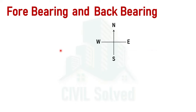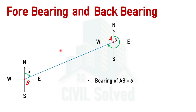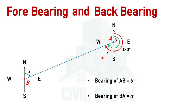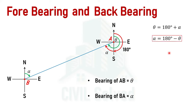Moving to the case where the line lies in the southwest quadrant: starting point is A, ending point is B, and the bearing of AB is theta. We want to calculate the bearing of BA, which we call alpha. Using the same geometric concept, if this angle is alpha then the corresponding angle is also alpha. We know the angle from north to south is 180 degrees, and theta equals 180 plus alpha, so alpha equals theta minus 180 degrees. This is the back-bearing when the line lies in the southwest quadrant.